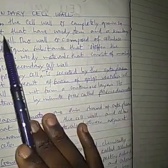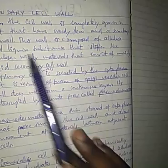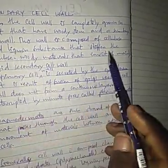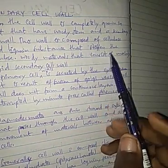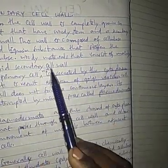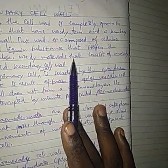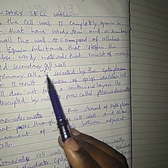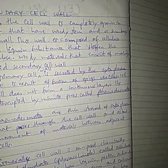When the cell wall becomes fully grown — as in wood stem — it forms the secondary cell wall. This secondary cell wall is composed of cellulose and lignin. Lignin is a substance that stiffens and hardens the wall. The primary cell wall is secreted by the cytoplasm and is the result of fusion of Golgi vesicles.